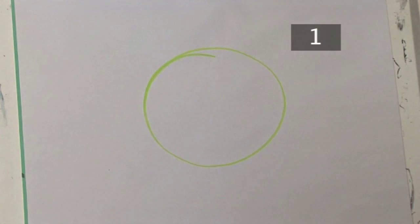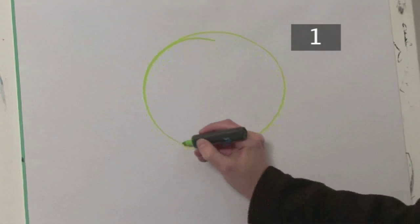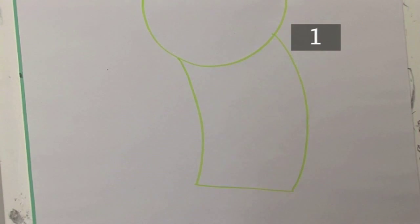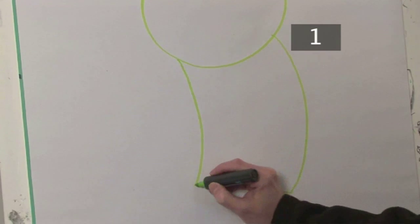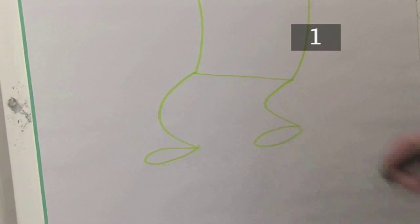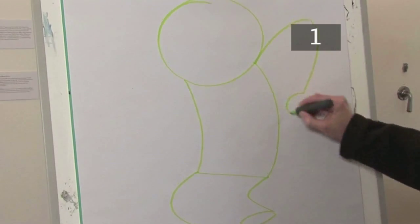Start with the monkey's head and give him a long body. His legs should be long too to help him swing through the trees. His monkey arms should be even longer.